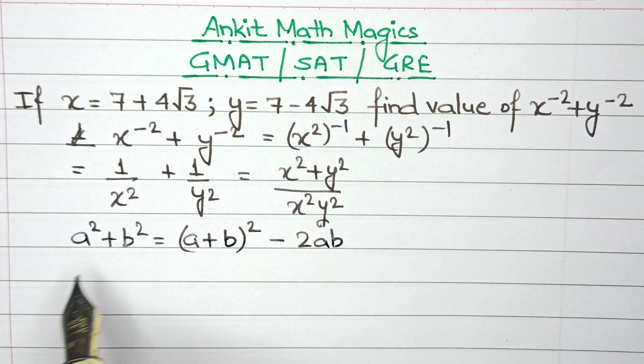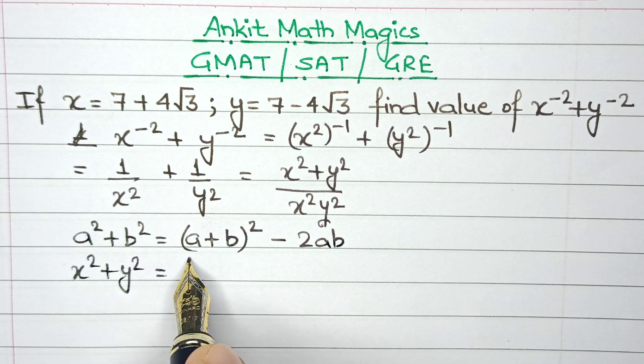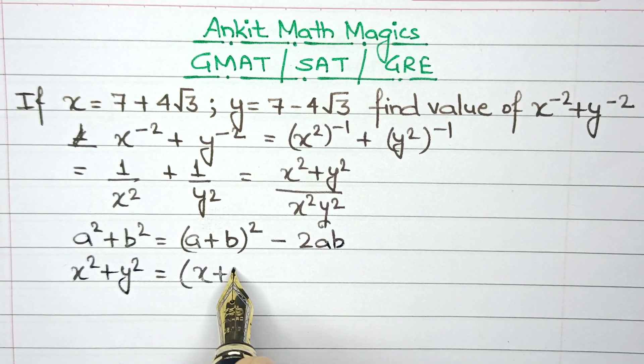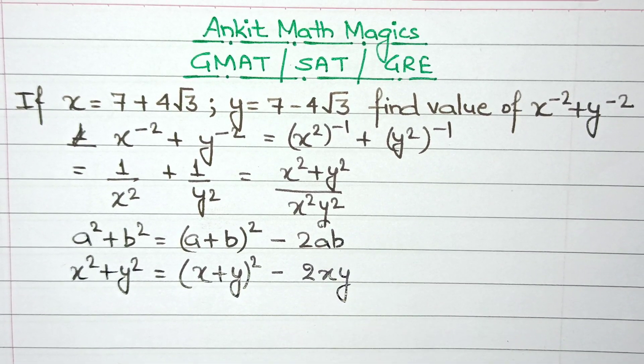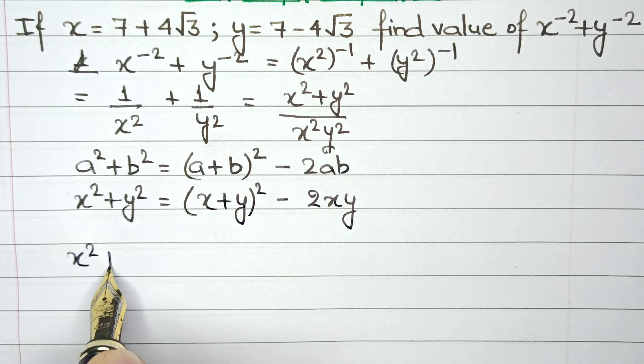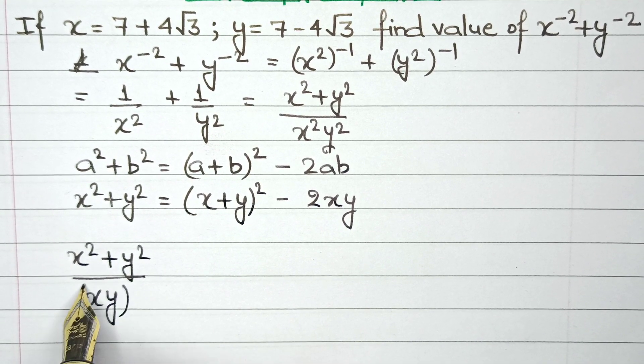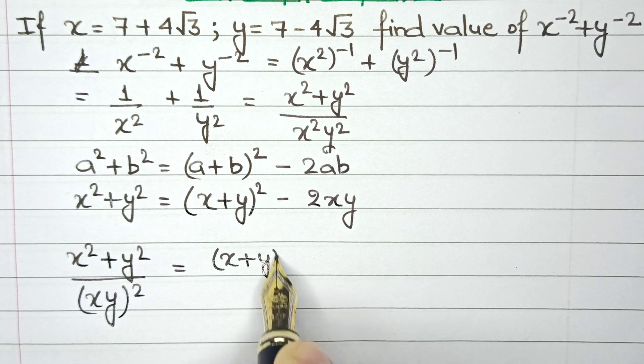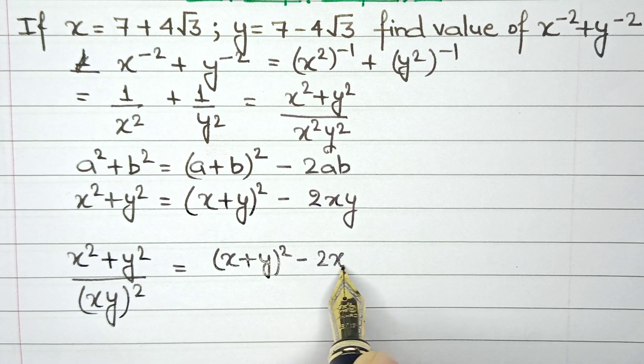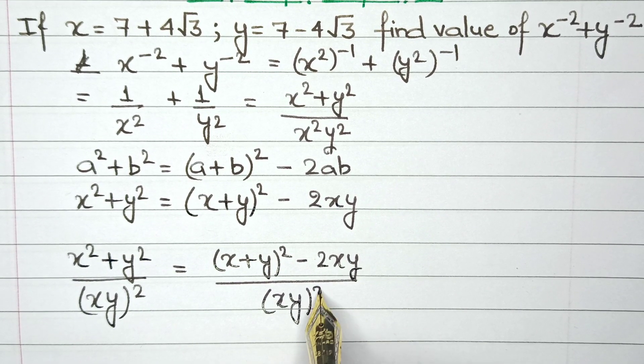But since I want the value of x square plus y square, let's substitute the values of a as x and b as y. So this would be x plus y whole square minus 2xy. That means the value of x square plus y square divided by xy whole square that I'm looking for can be now written as x plus y whole square minus 2xy divided by xy whole square.